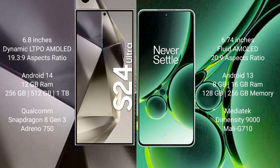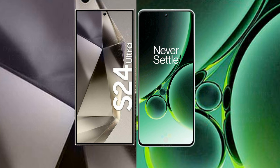The Samsung Galaxy S24 Ultra comes with 12GB RAM and 256GB, 512GB, or 1TB internal storage, powered by a Qualcomm Snapdragon 8 Gen 3 processor and Adreno 750 GPU. The OnePlus Nord 3 comes with 8GB or 16GB RAM and 128GB or 256GB internal storage, powered by a MediaTek Dimensity 9000 processor and Mali-G710 GPU.